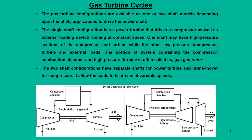Let us try to understand the thermal circuits for gas turbine cycles. The first type of configuration is the single shaft arrangement, or it can have a two shaft configuration — these are the two possibilities gas turbines normally operate in. If you look at a gas turbine unit, there are four basic components: one is the compressor, second is the turbine, third is the combustion chamber, and fourth is the shaft.